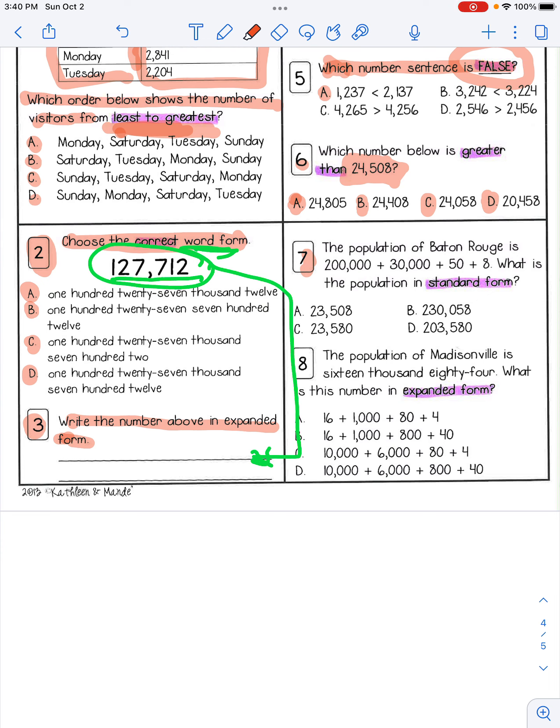And number seven, the population of Baton Rouge is 200,000 plus 30,000 plus 50,000 plus 8. What is the population in standard form? Standard form. A, 23,508. B, 230,058. C, 23,580. D, 203,580. And last question, number eight.